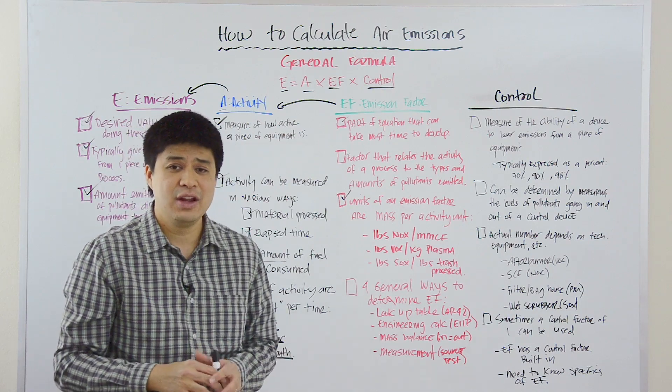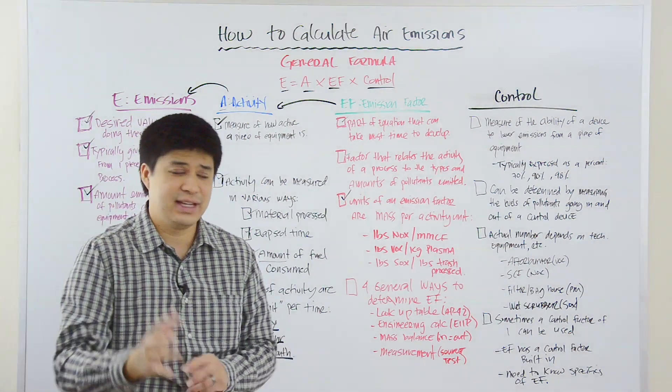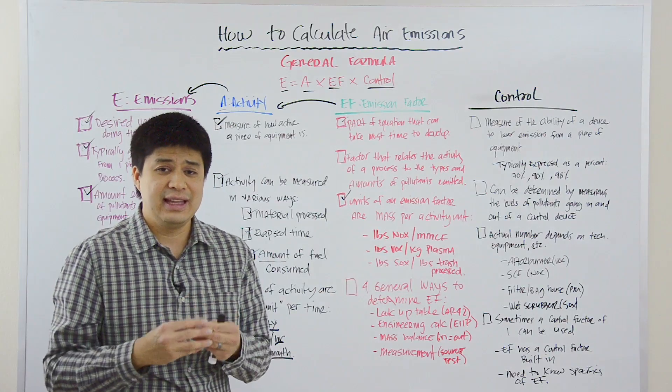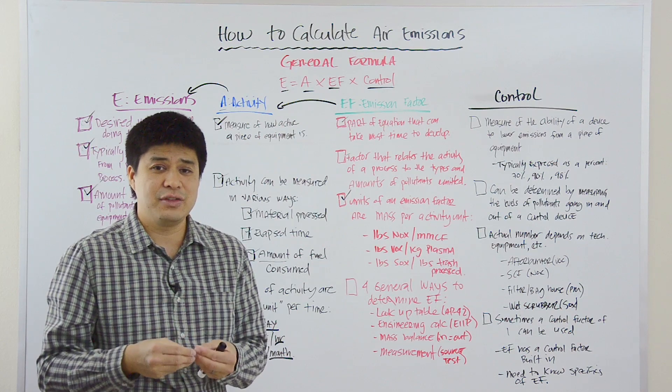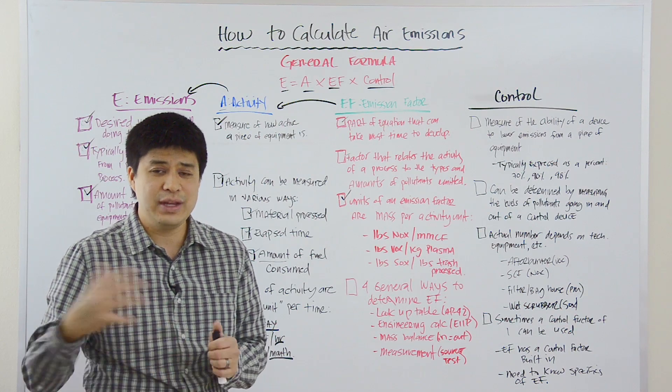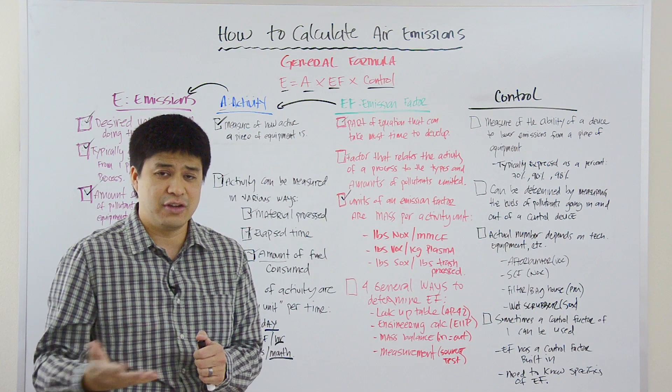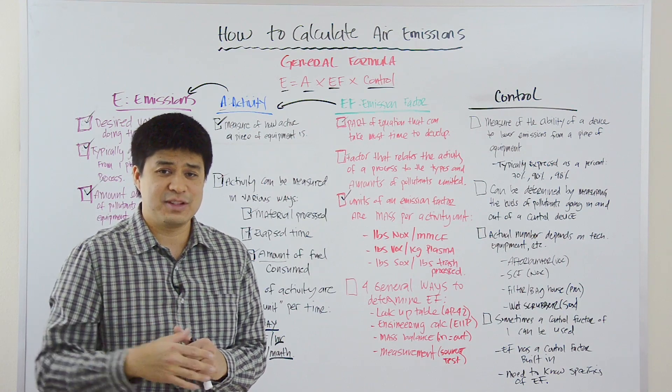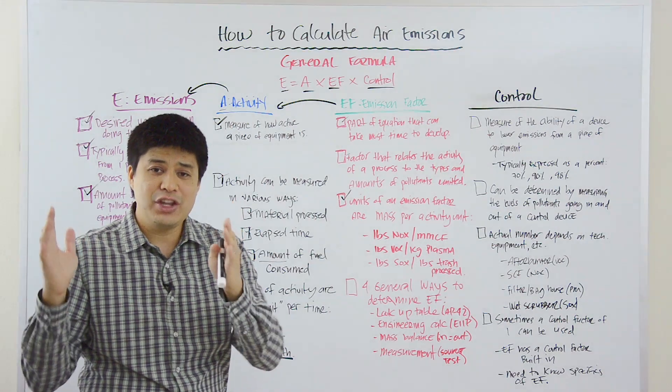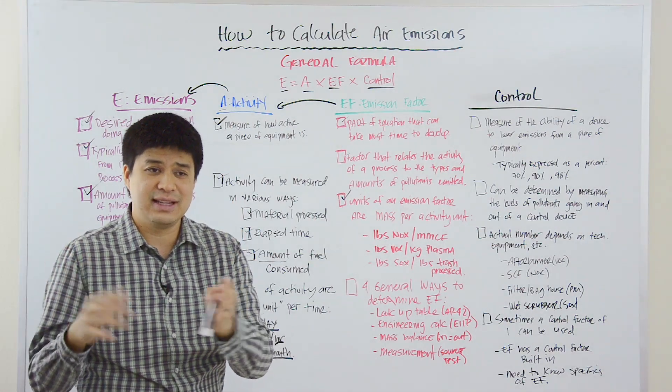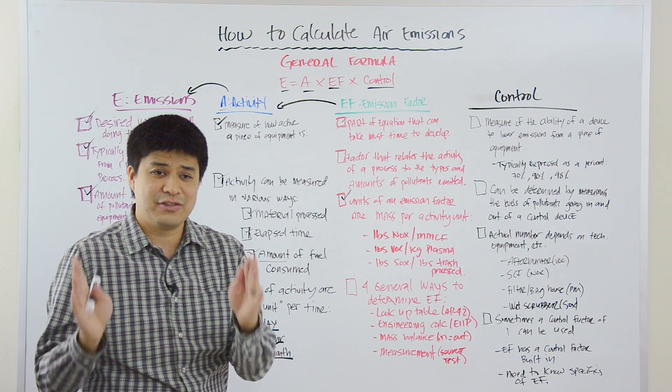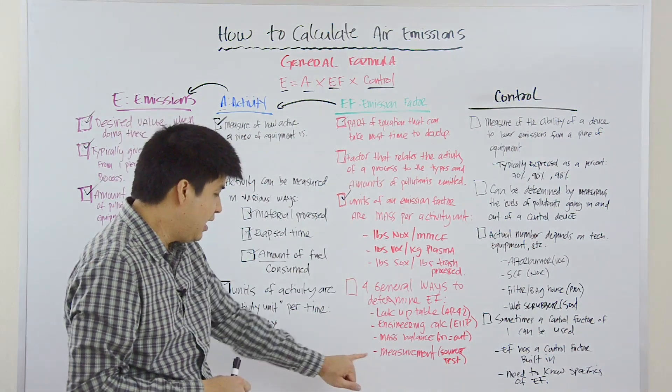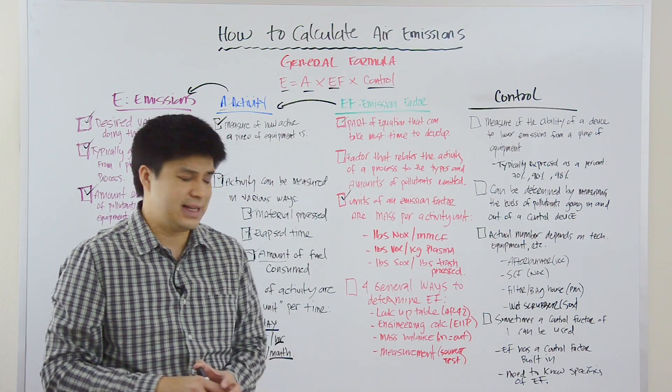You can do a mass balance where you just assume that everything goes in, comes out. And the best example of that is calculating SOx from the combustion of diesel fuel by an engine. And so, if we know that the SOx or the sulfur concentration in diesel fuel is 0.15 parts per million, then we know that for every unit of diesel fuel combusted, if all of that sulfur is converted to SOx, then we know how much SOx is being emitted off the stack.